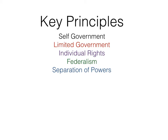You've made it through almost the entire government course. This lesson and the next we're going to review what we learned in American government. I want to look at the key principles that make you American — what it means to be an American. The key principles you should know are self-government, limited government, individual rights, federalism, and separation of powers.